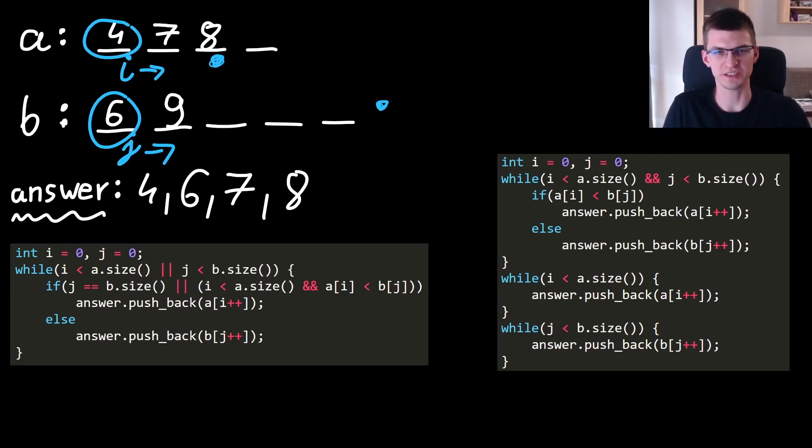If j is here and i is still there, we ran out already of elements of the second array, then we want to continue adding elements of the first array, hence a complicated if here. When do I want to add a[i] to the answer?